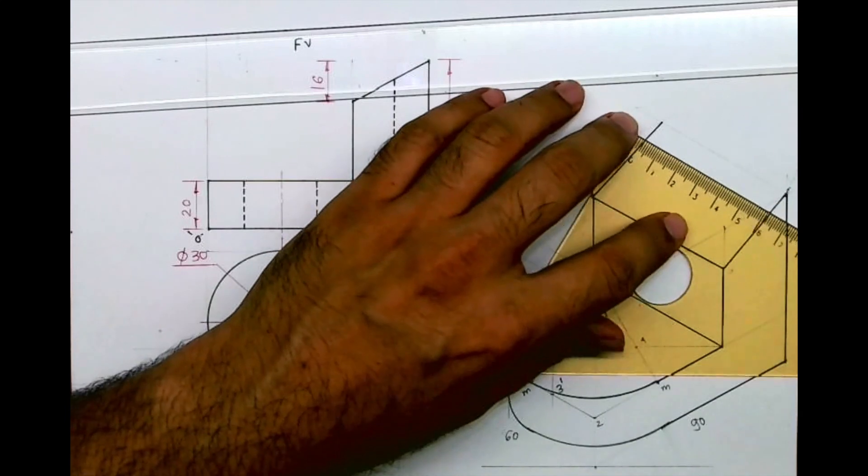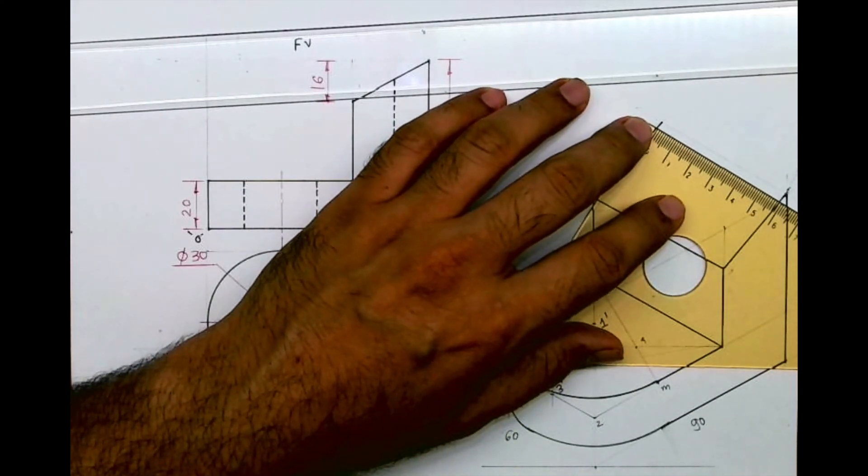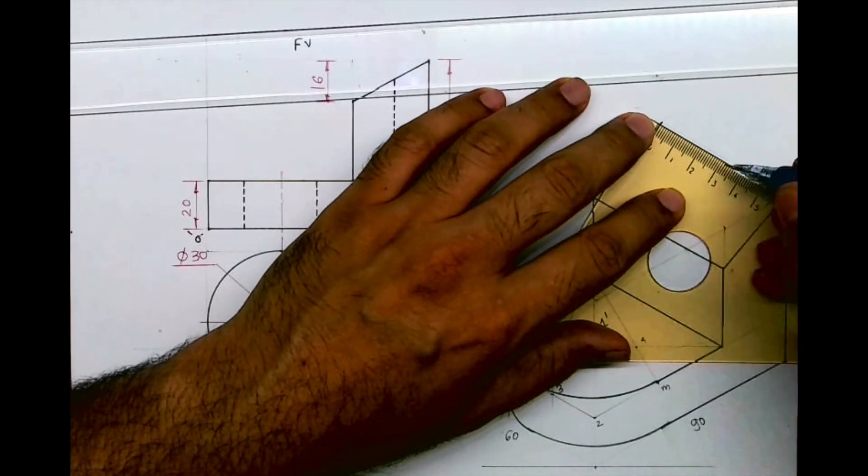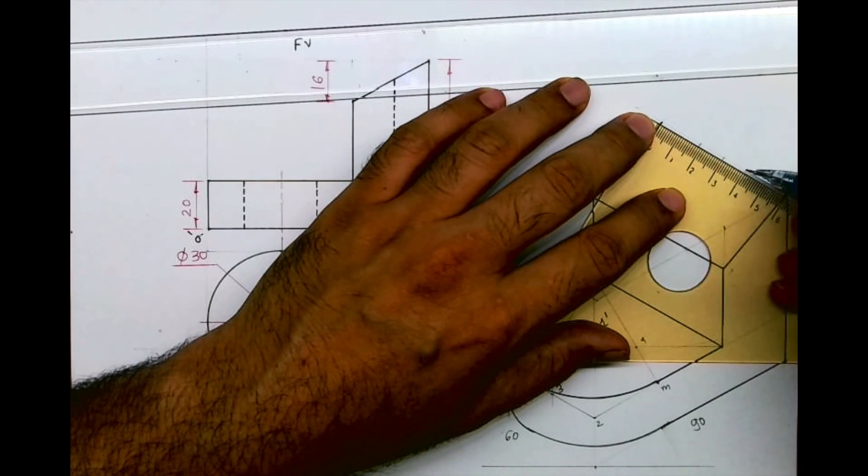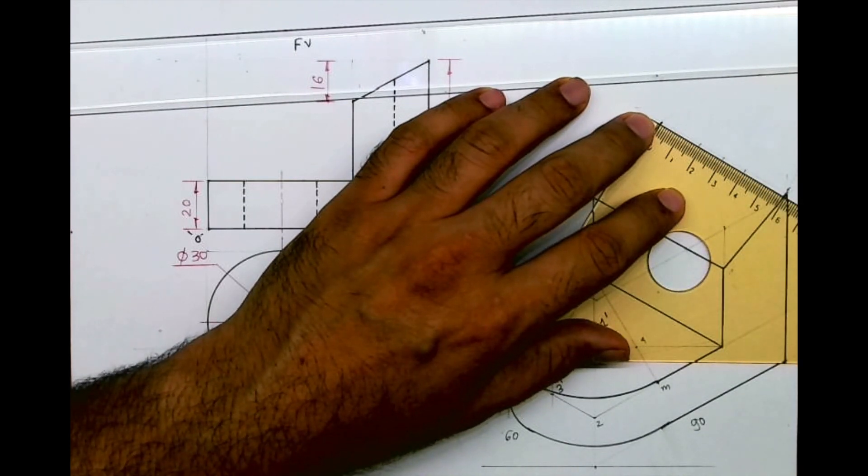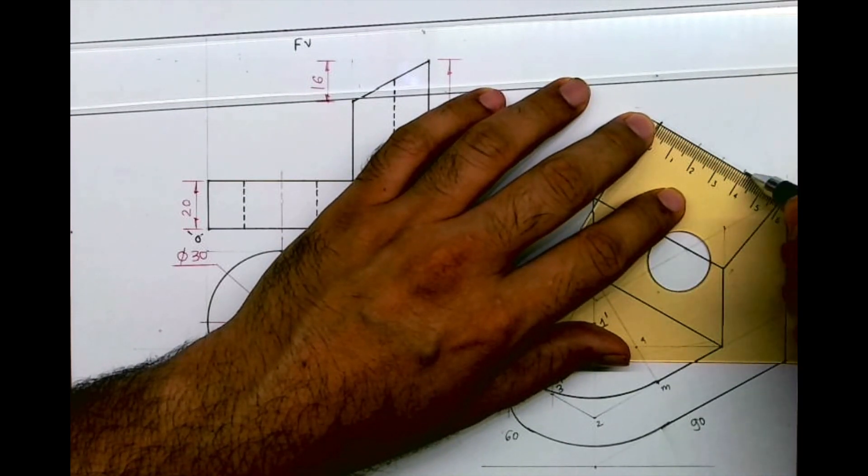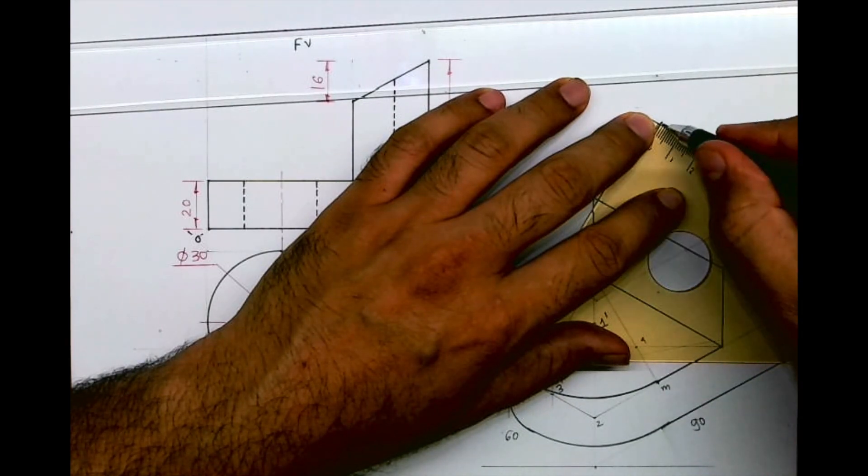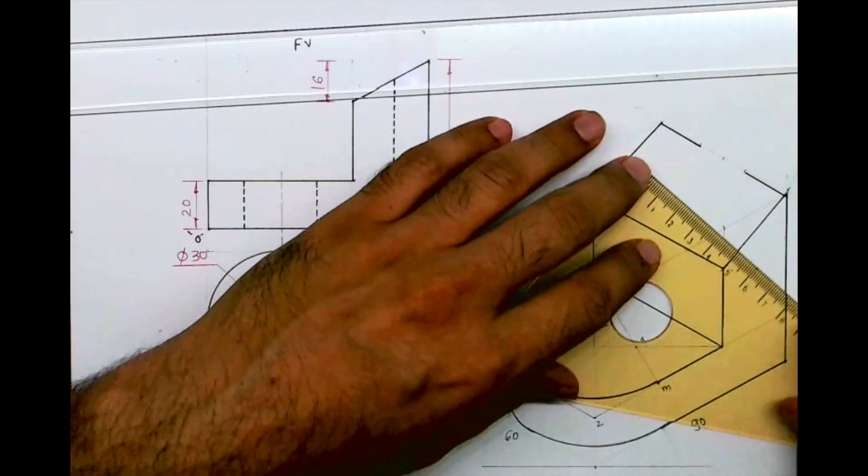Now we'll draw this slot. So if you see, total is 60, midpoint I will take and I will take 10 on both the sides. Now after that.